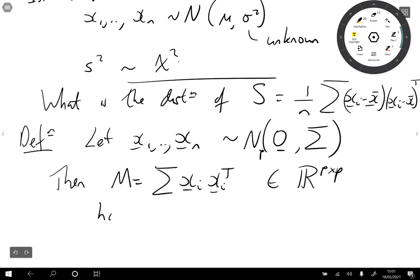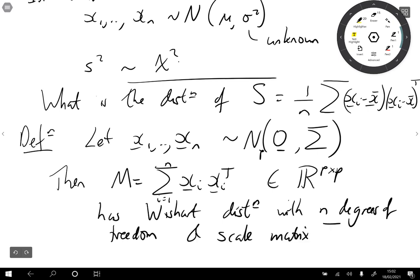Then M has a Wishart distribution. And if the sum here includes n terms, then we say it has a Wishart distribution with n degrees of freedom and scale matrix sigma.